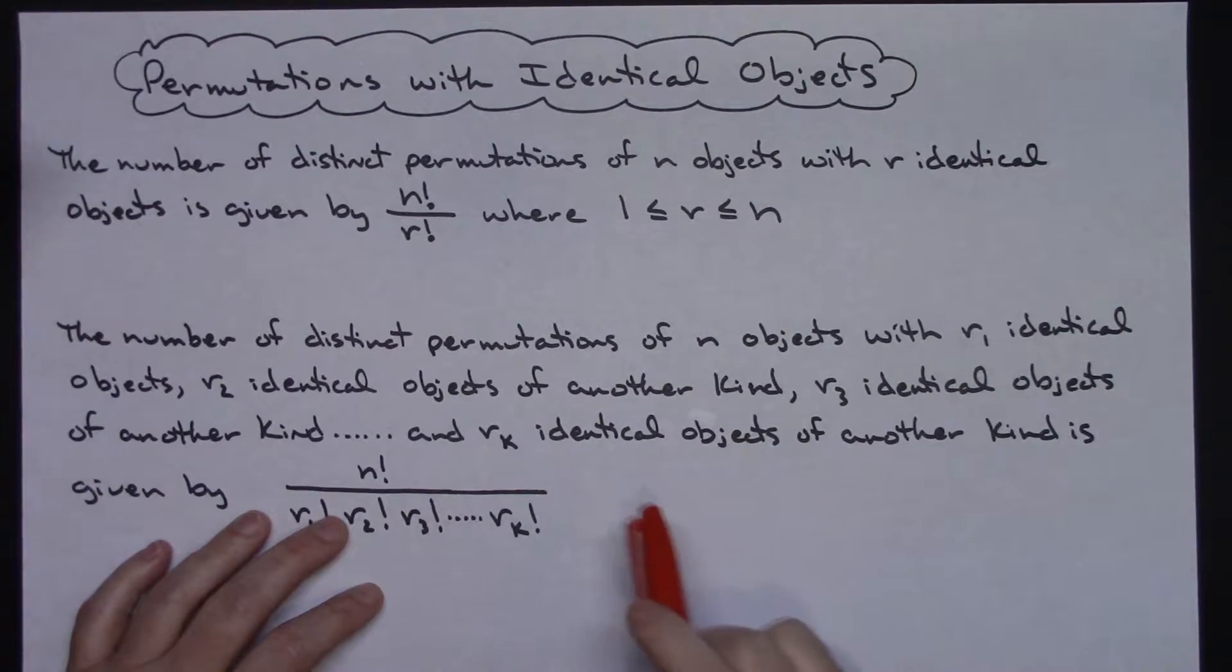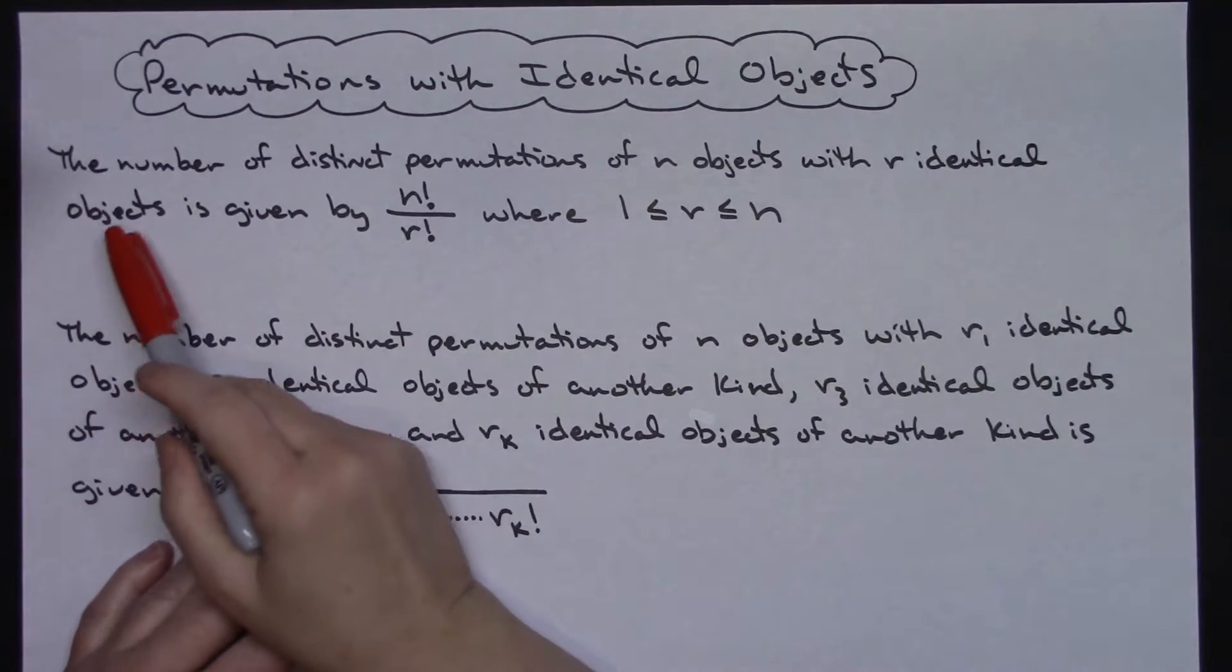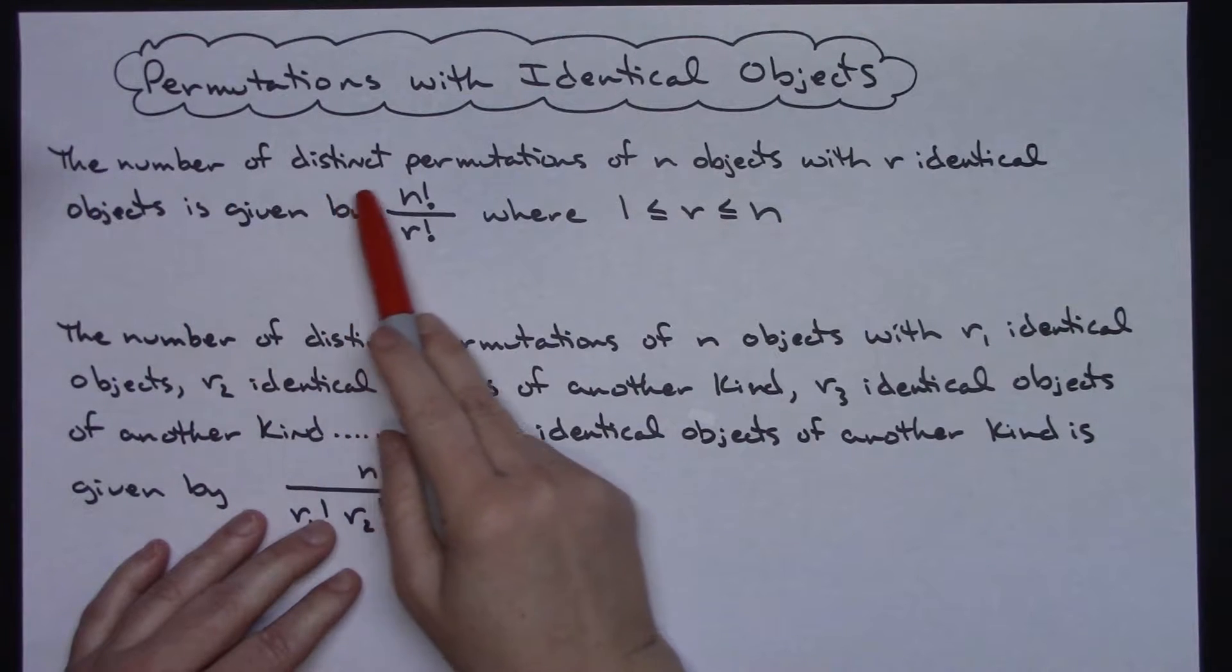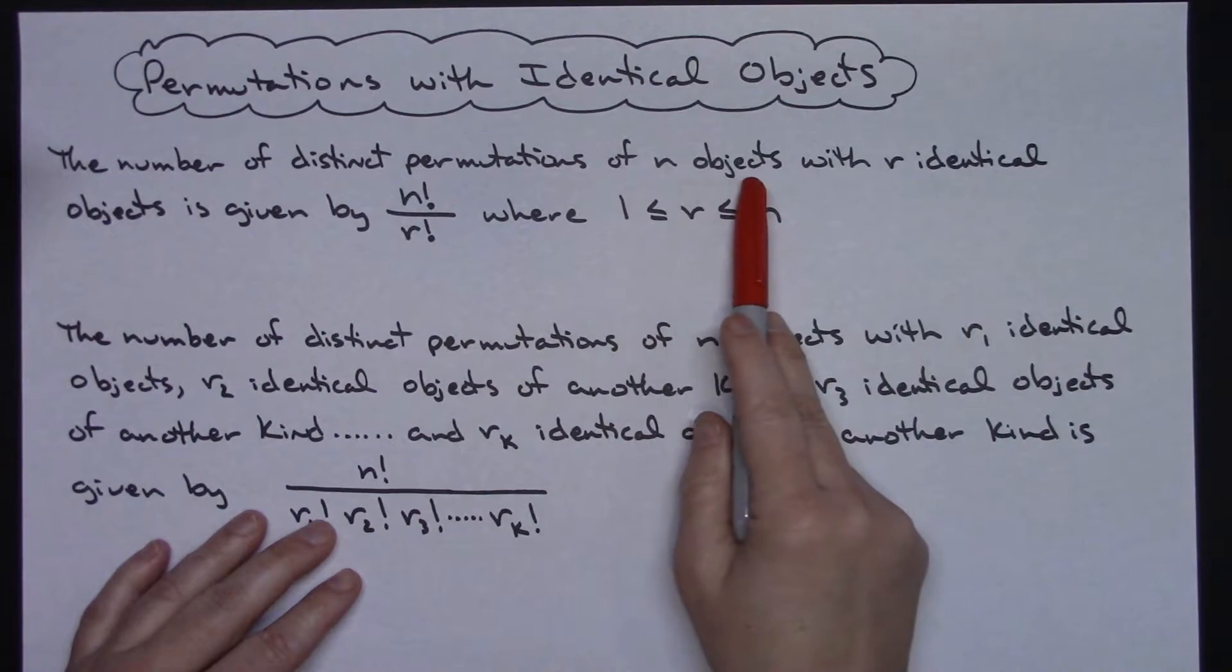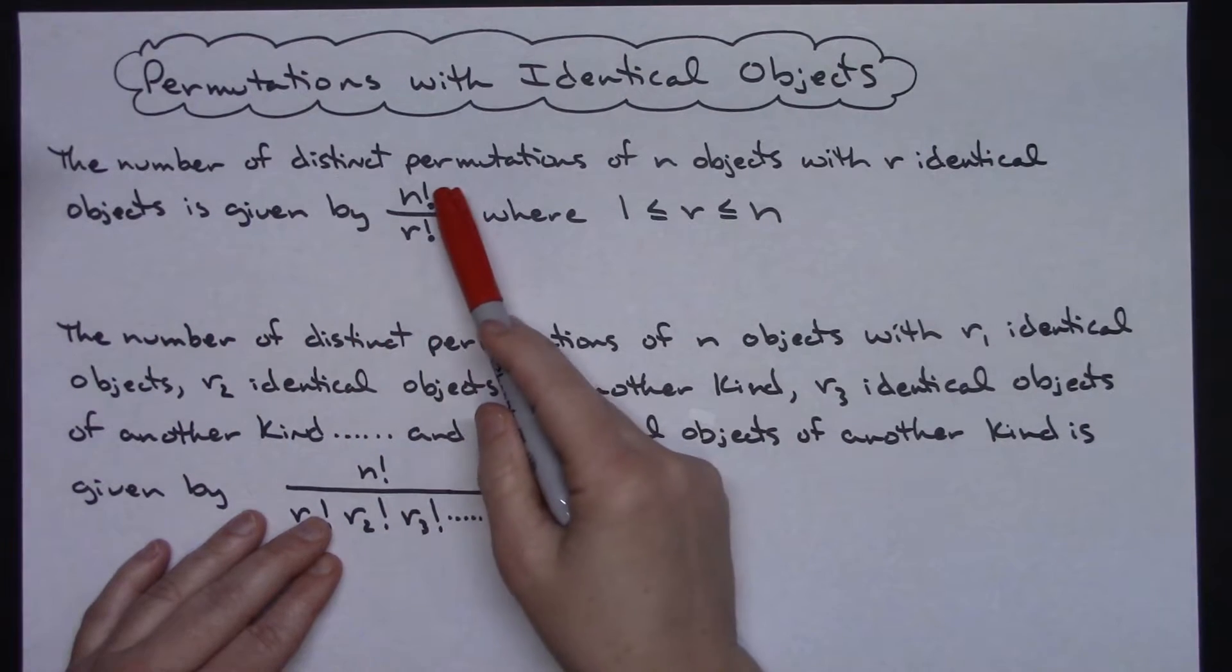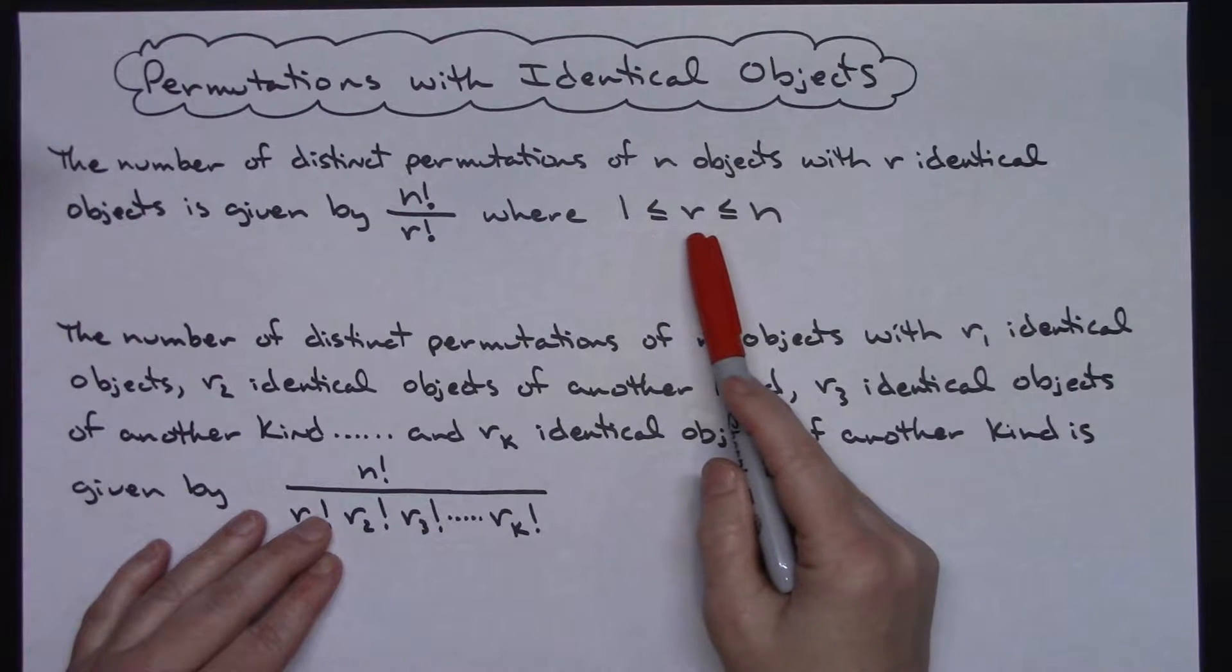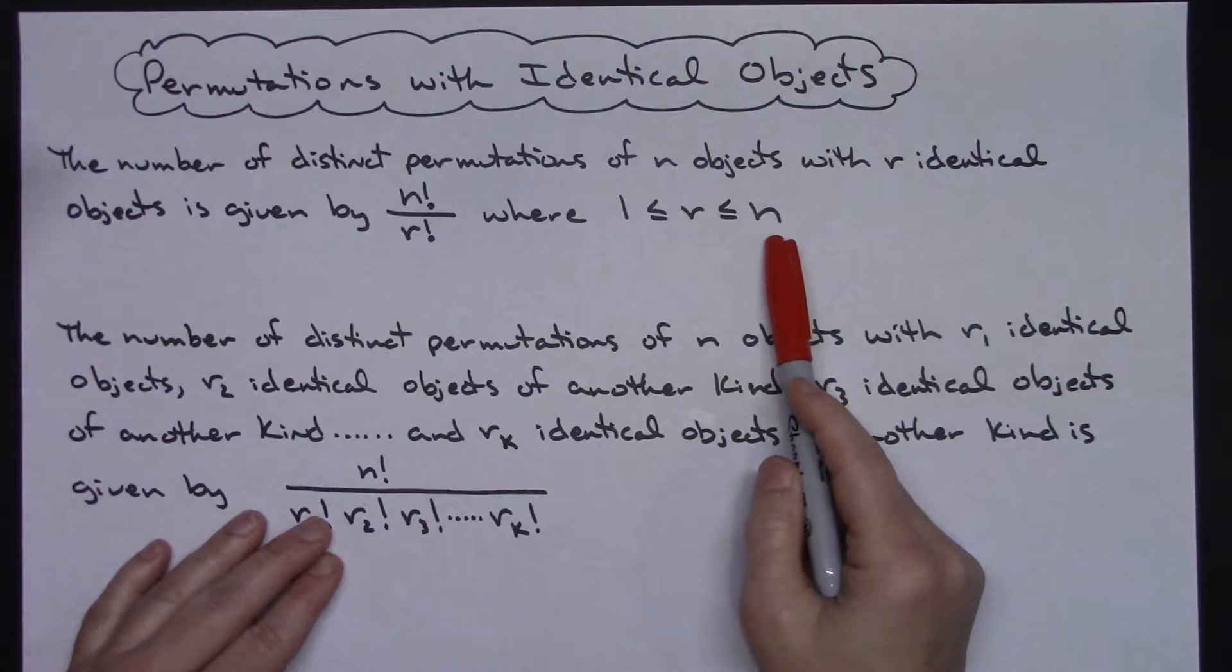In this video I'm going to be taking a look at permutations with identical objects. For my first formula, the number of distinct permutations of n objects with r identical objects is given by n factorial over r factorial, where 1 is less than or equal to r is less than or equal to n.